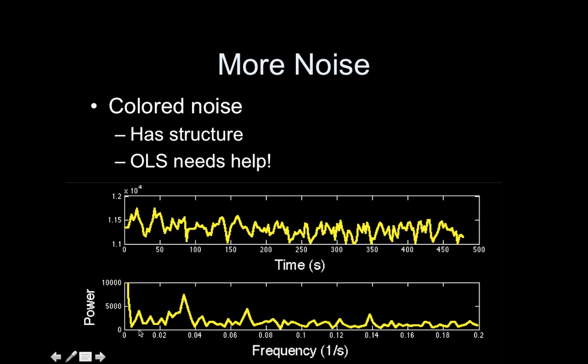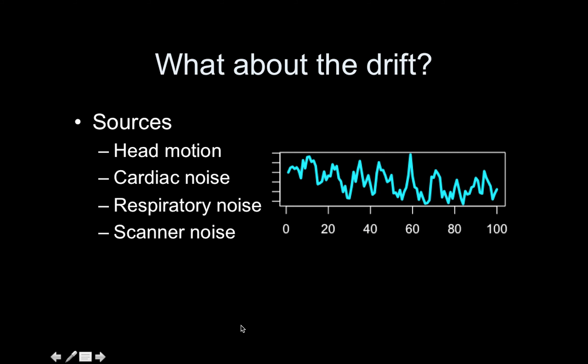They call this colored noise because it's not white — certain frequencies are stronger than others. What about this drift? This is a real time series from BOLD data and you can definitely see it's drifting. It's not because the brain was working harder here and less hard here, but various things contribute to this drift. Probably the biggest is head motion. There can be cardiac noise, respiratory noise, scanner noise. All sorts of contributions cause this drift, and we can't stop it — no matter how well you pad your subject, they're still going to be breathing and doing other things.